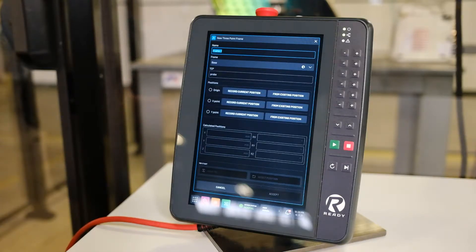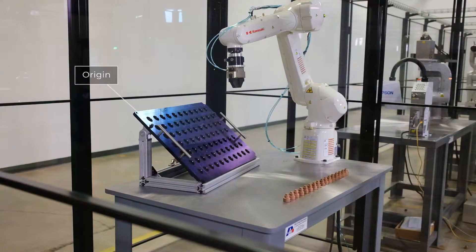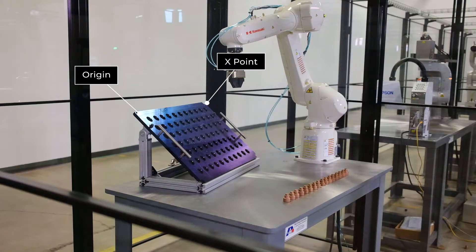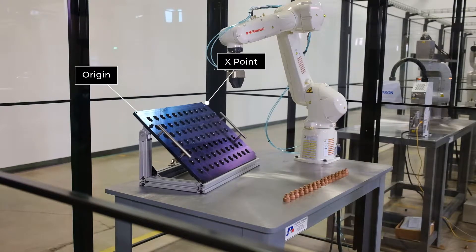Now the three-point frame is defined using three points in space. First is the origin point of the Cartesian coordinate frame or frame of reference. The second point defines the direction of the x-axis of that Cartesian coordinate frame, and the third point defines the direction of the y-axis.